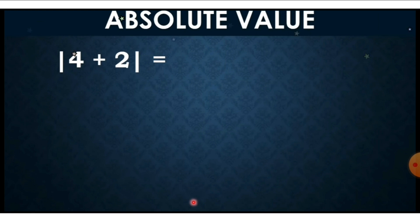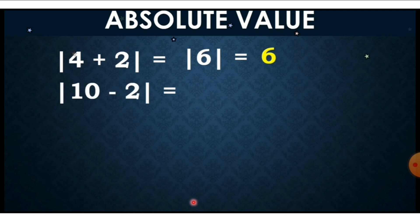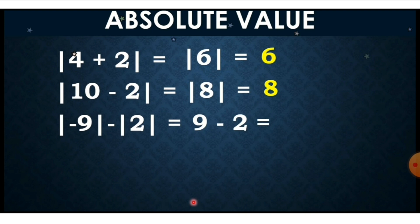Let's do other examples. You can see there is an operation. Before we get the absolute value, we have to solve the operation first. So let's get the sum first: four plus two equals six, then the absolute value of six is six. How about the absolute value of ten minus two? The answer is eight, and the absolute value of eight is eight. How about the absolute value of negative nine, minus the absolute value of two? First, the absolute value of negative nine is nine, and the absolute value of two is two. Then subtract: the answer is seven.